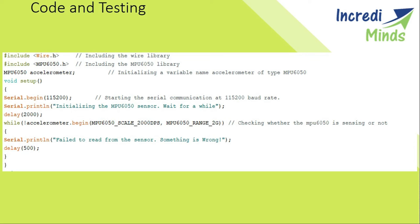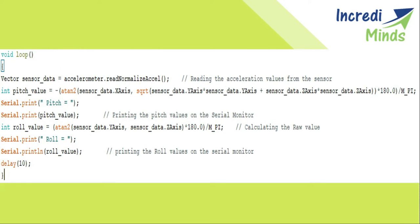We declare a variable named accelerometer of type MPU6050. In the setup function, we check whether our accelerometer is sensing properly and returning values. If the sensor is functioning properly, the Arduino will receive the values to calculate the pitch and roll values. Otherwise, the Arduino will print 'fail to read from the sensor.' After that, we take readings from the sensor and store them in a variable called sensor data. Then we calculate the pitch values and the roll values using the sensor data, and show these values on the serial monitor.